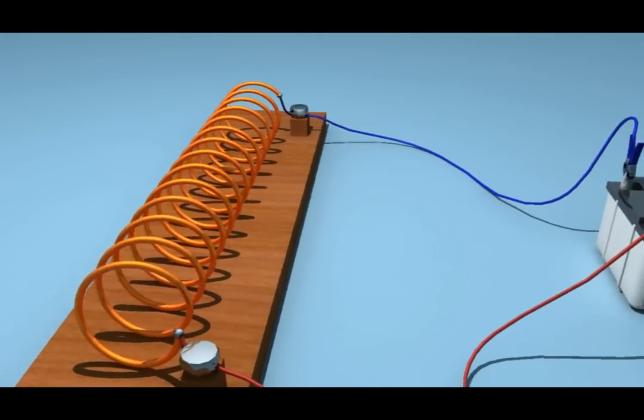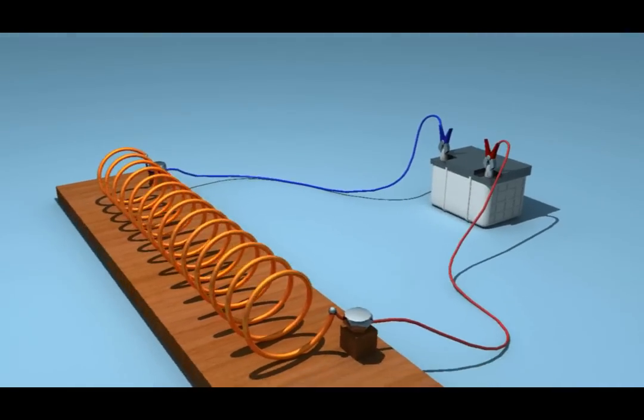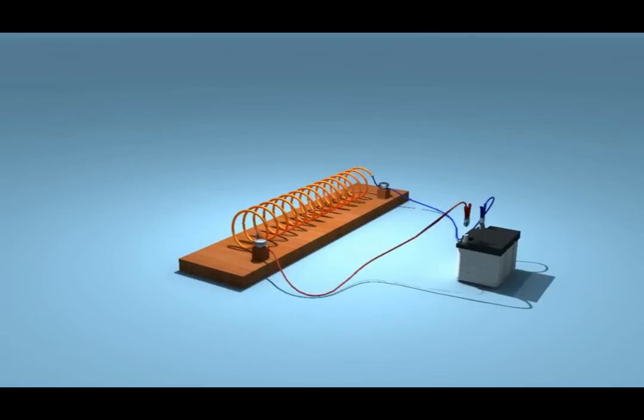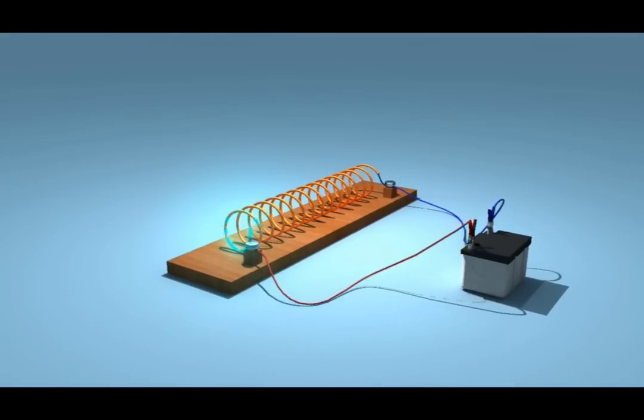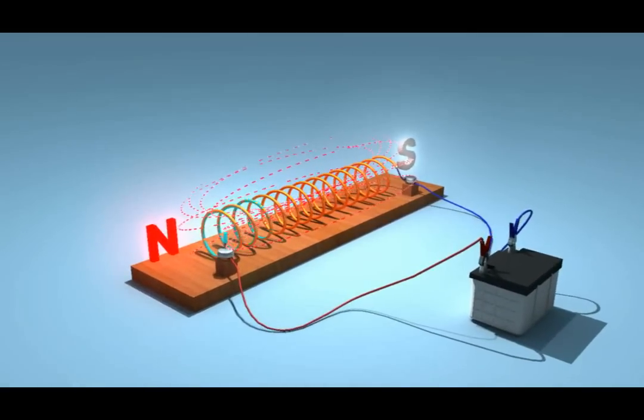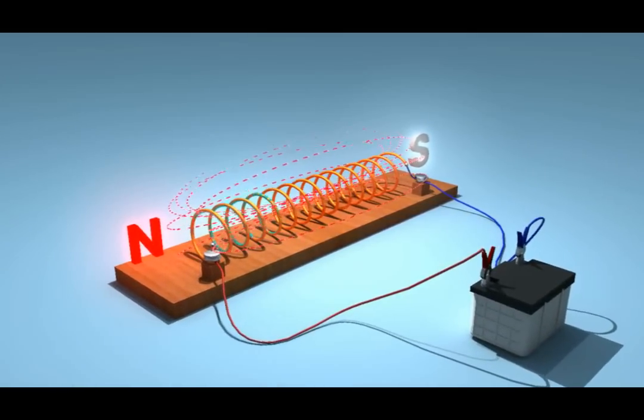The electromagnetic effect of a solenoid is used in several appliances. Let us pass electric current through the solenoid and observe the pattern of magnetic field lines demonstrated here.